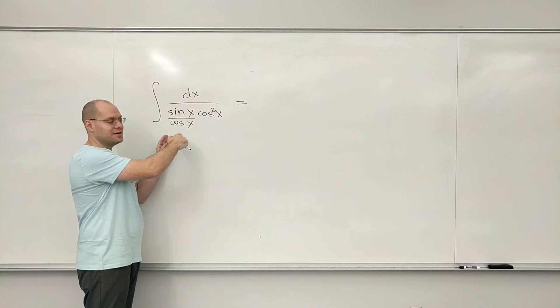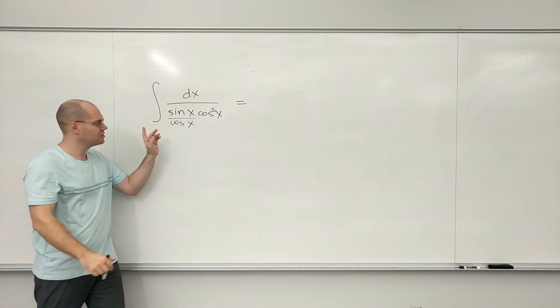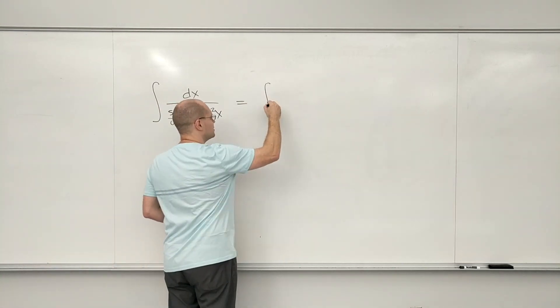So we have everything we need to apply the chain rule in reverse in in-your-face fashion. We have 1 over something times the derivative of something.